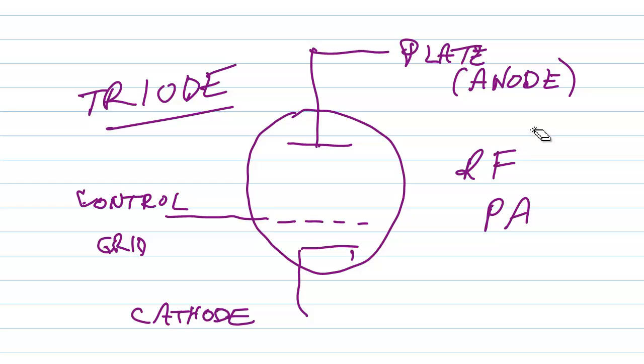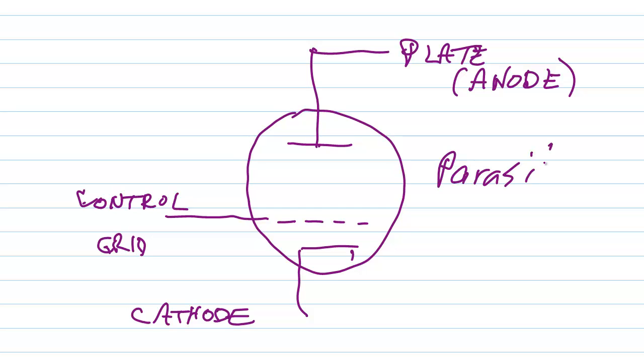I talked about how triode vacuum tubes can be somewhat unstable, meaning they can break into a self oscillation or parasitic oscillation situation, particularly in the grounded cathode arrangement. In the grounded grid arrangement that is less likely to occur but it still can.